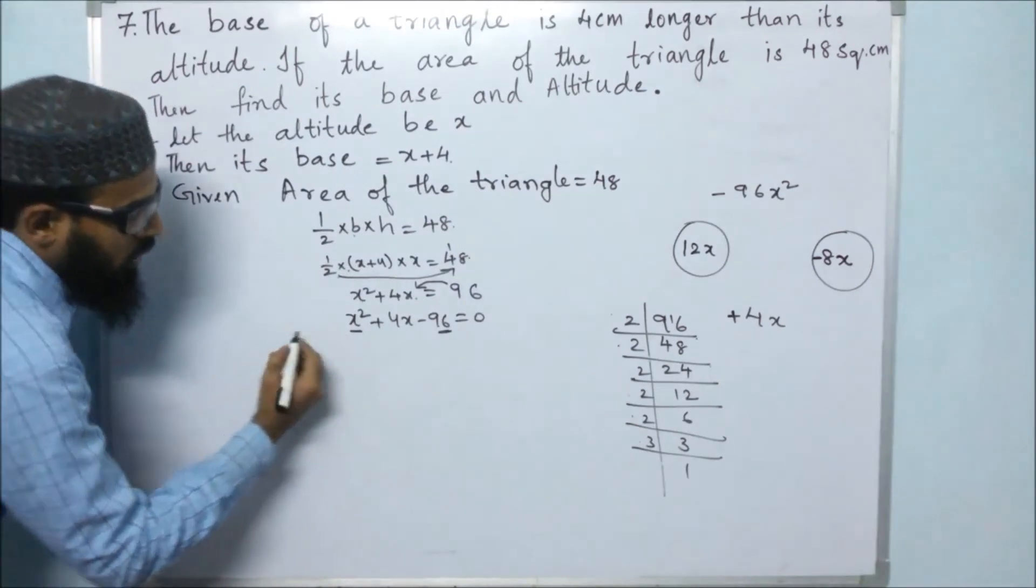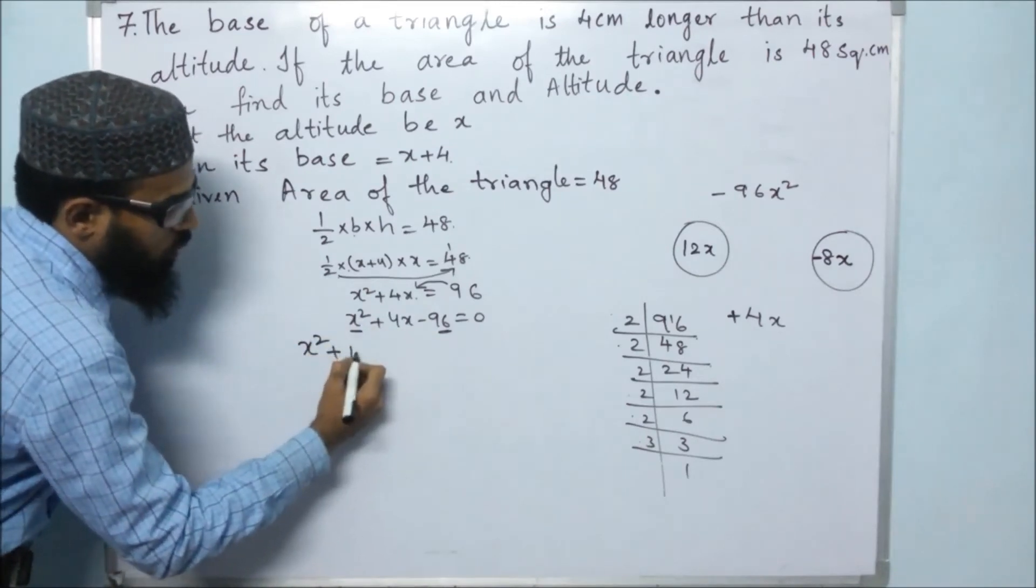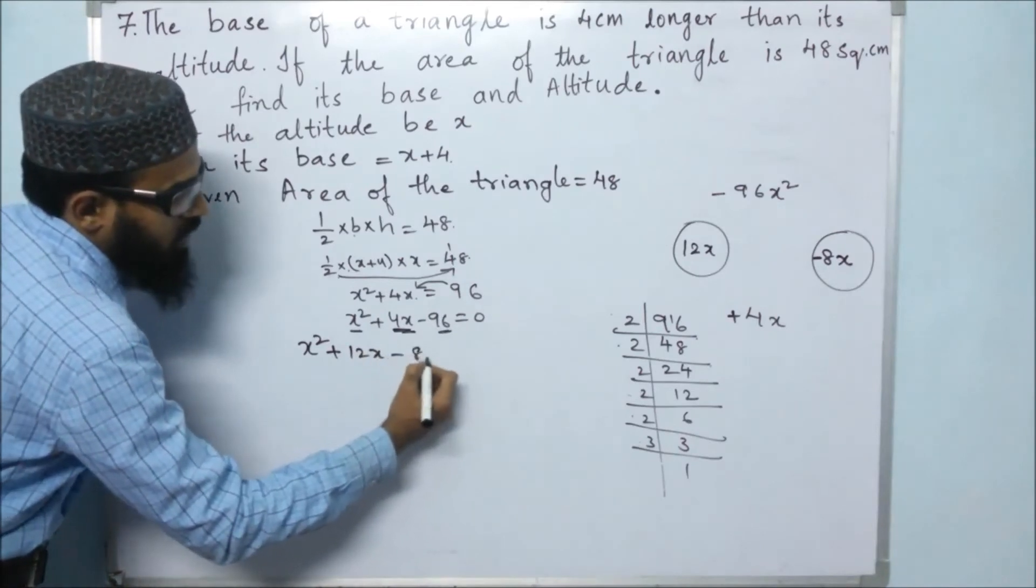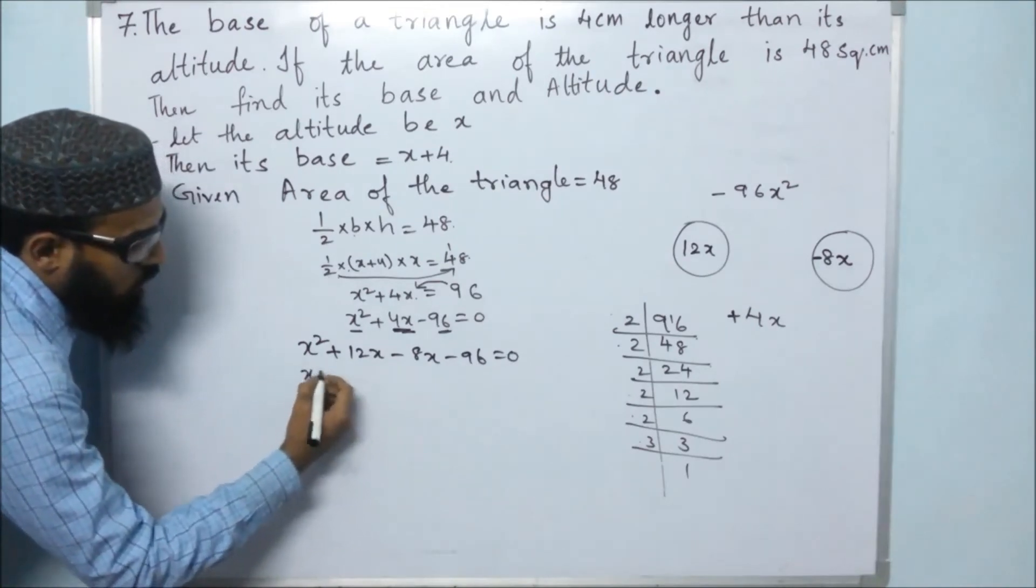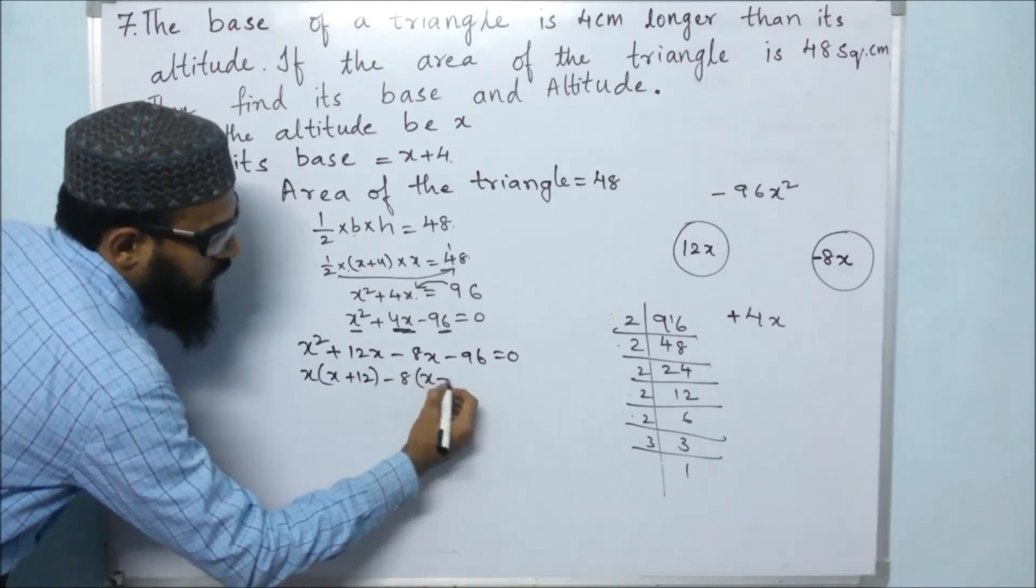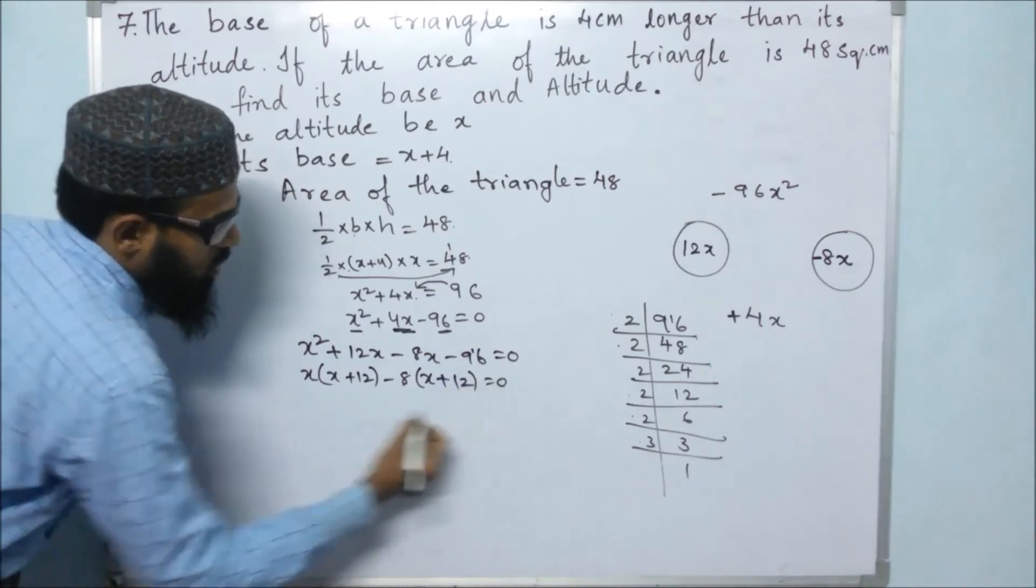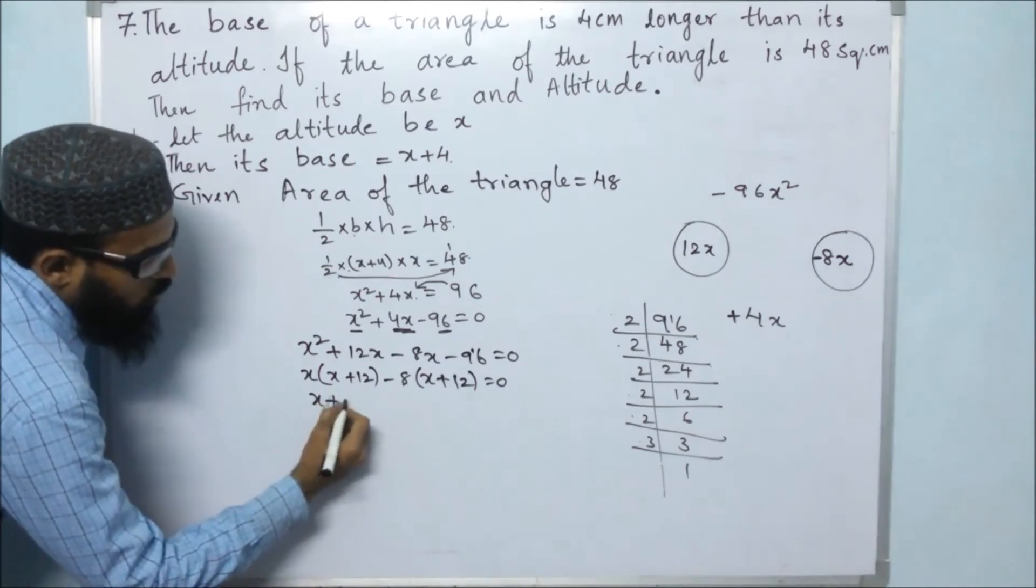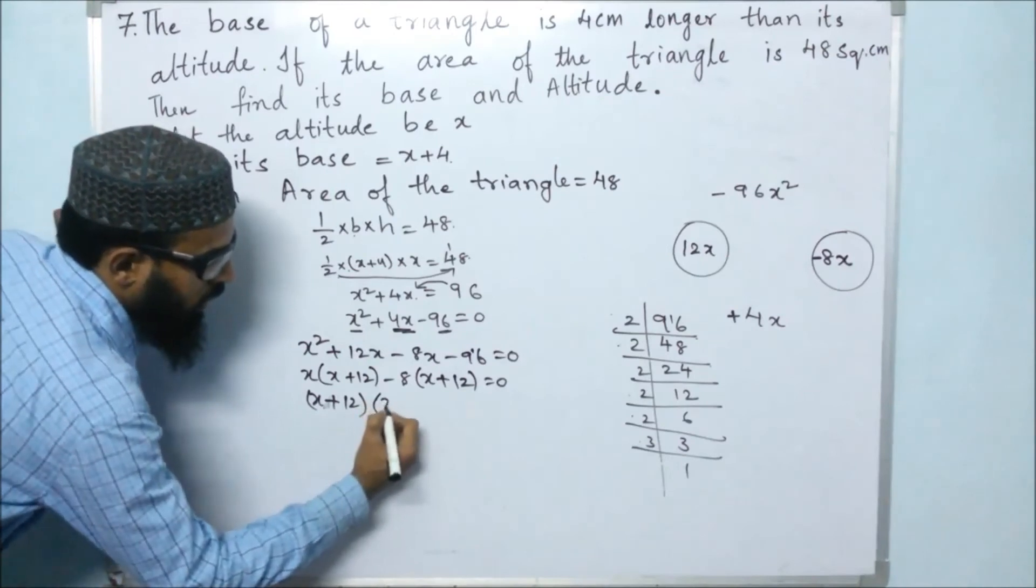Now we will replace 12x here. So in place of 4x, we will substitute 12x and minus 8x minus 96 equals 0. Now x can be taken out as common: x plus 12, minus 8 common, x plus 12, equals 0. So x plus 12 and x minus 8 equals 0.